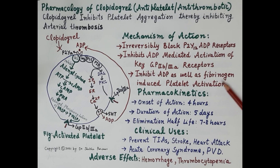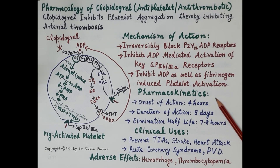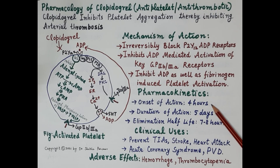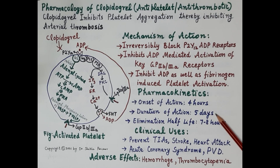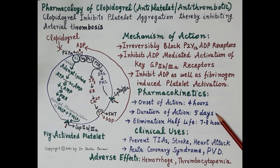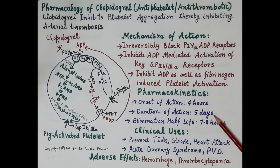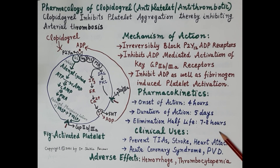Regarding pharmacokinetics, clopidogrel is a slow-acting drug with an onset of action of four hours. Since clopidogrel causes irreversible blockage of the platelet P2Y12 receptor, its anti-platelet action lasts for about five to seven days. Its elimination half-life is seven to eight hours, and the dose of clopidogrel is 75 mg once daily.